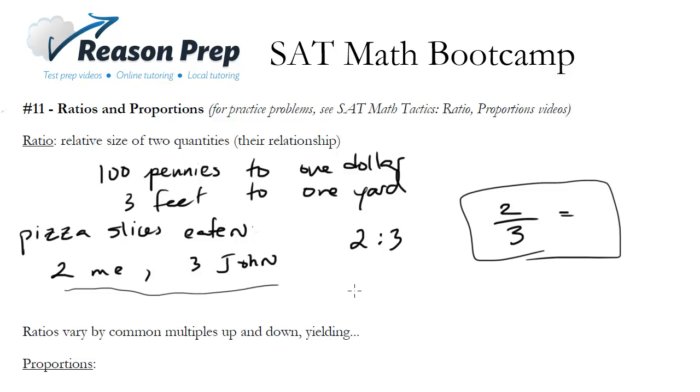Notice a recipe is another example of a ratio: two eggs for every one cup of milk for every three cups of flour. I can have three ingredients in a ratio. It doesn't just have to be two things. These are all examples of ratios, and notice that ratios vary by common multiples up and down. Let's double my recipe: four eggs, two cups of milk, and six cups of flour. We're just multiplying everything by two.